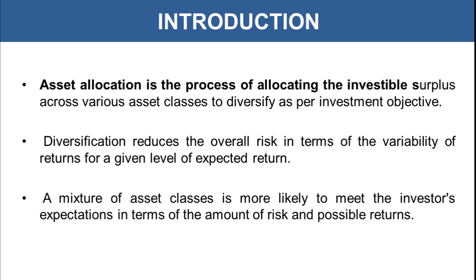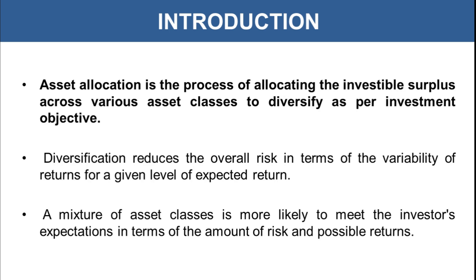Asset allocation is the process of allocating the investable surplus across various asset classes to diversify as per investment objective. There are various asset classes — you may invest in equity or shares, debt funds, mutual funds, provident funds or fixed deposits, metals like gold and silver, commodities traded in commodity exchanges, real estate, or any startup business. These are the various asset classes.